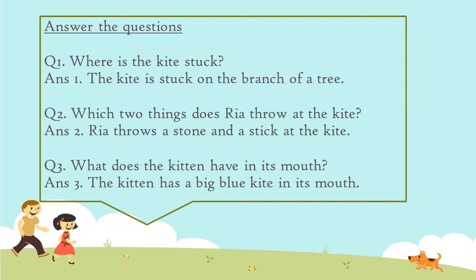Next question: What does the kitten have in its mouth? When Riya is sad, she sits under the tree. What does the kitten bring? The kitten has a big blue kite in its mouth.